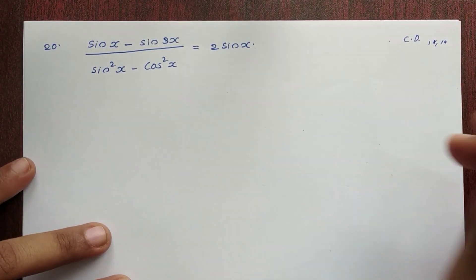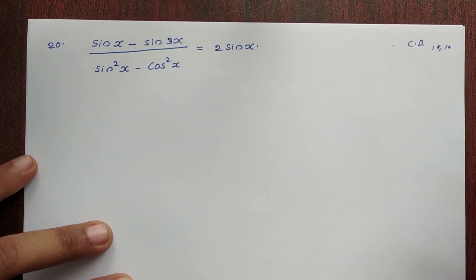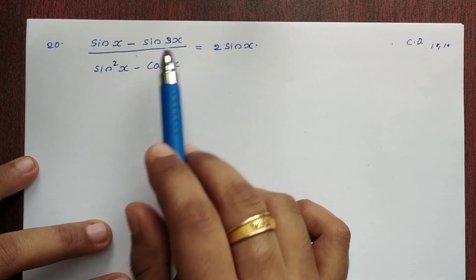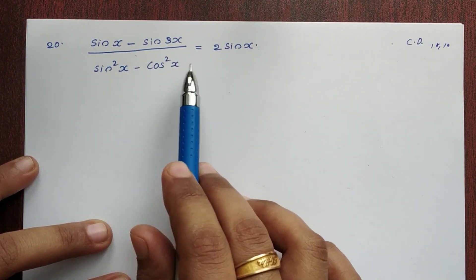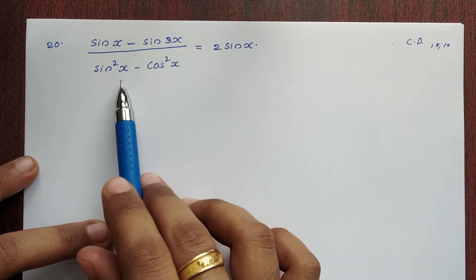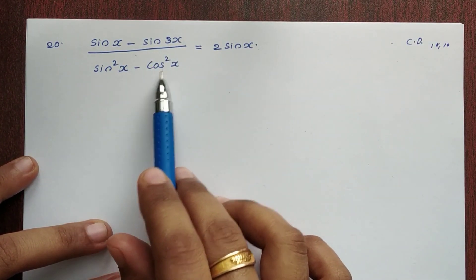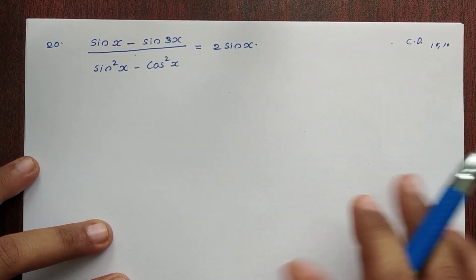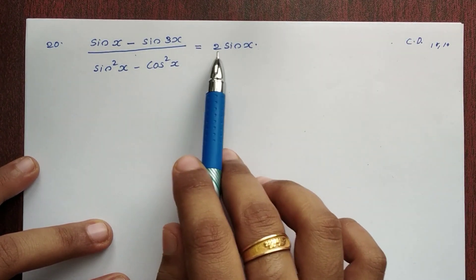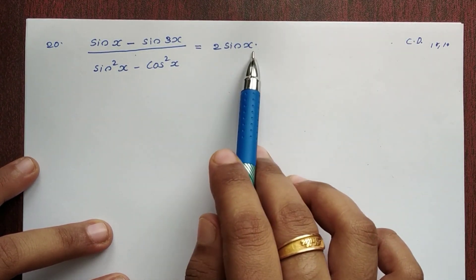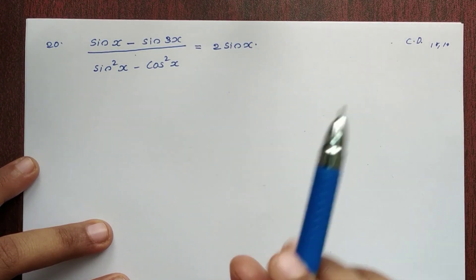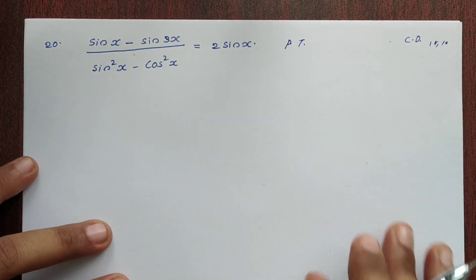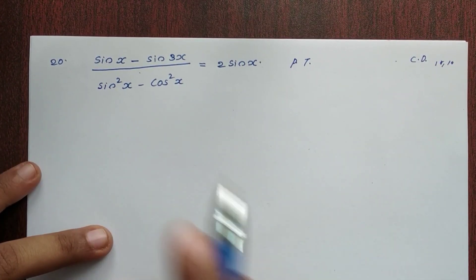This is the 20th problem. We need to prove that sin x minus sin 3x, the whole divided by sin squared x minus cos squared x, is equal to 2 sin x. Let me prove it here.